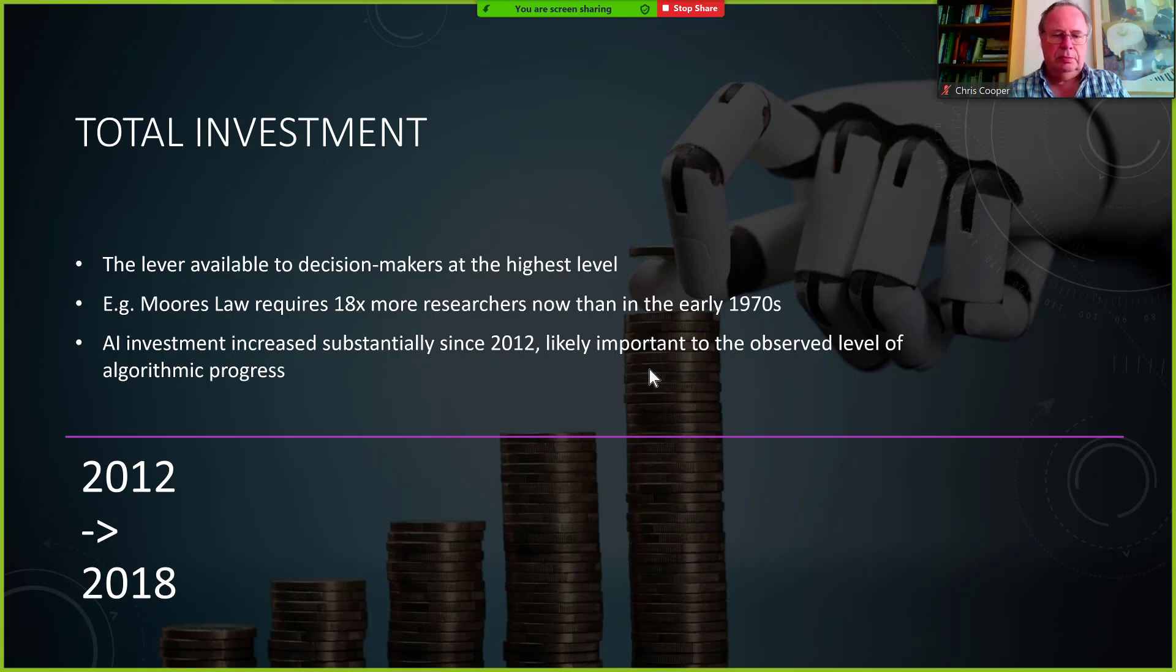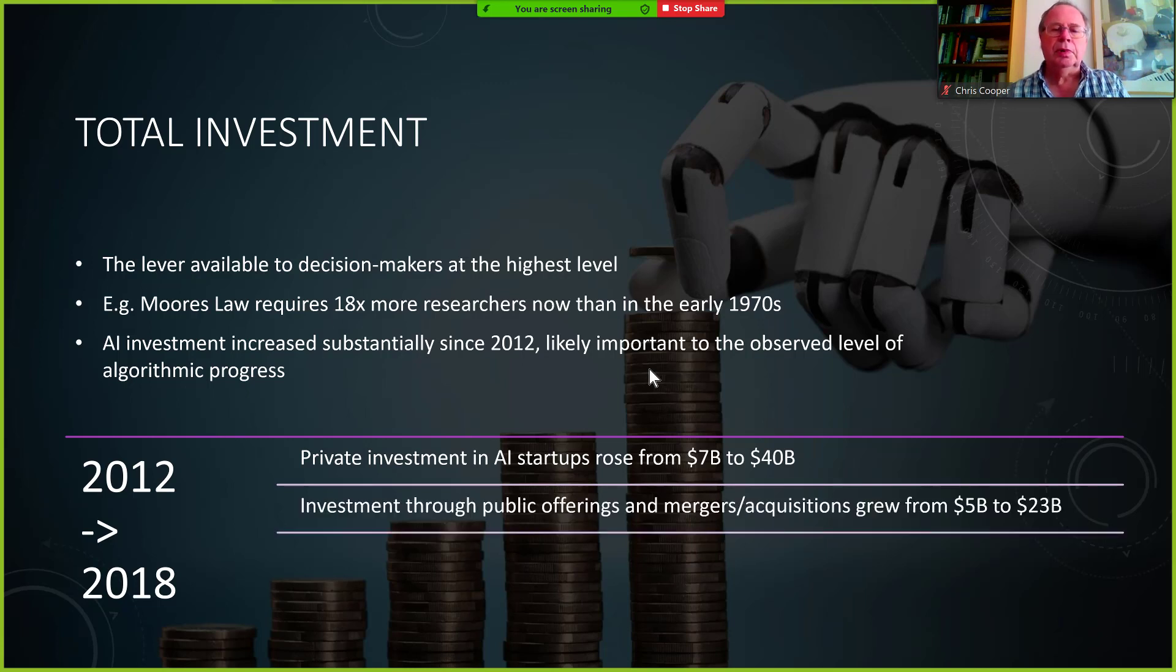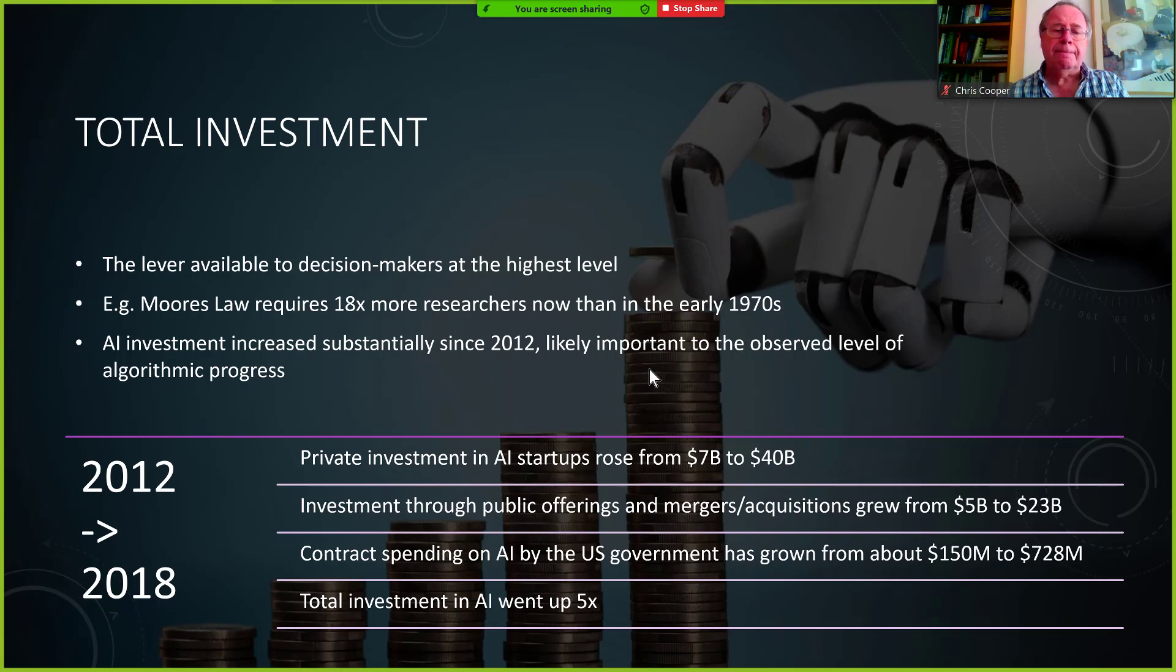So another way we could look at this is to see the level of investment in AI. We see for instance that Moore's Law requires a lot more research now than it did back in the 70s. And AI investment in a similar scheme has increased very substantially. And this is both in compute and probably also in that more researchers are looking at the algorithms. Here are some numbers between 2012 and 2018. In total, the investment went up roughly by a factor of 5.